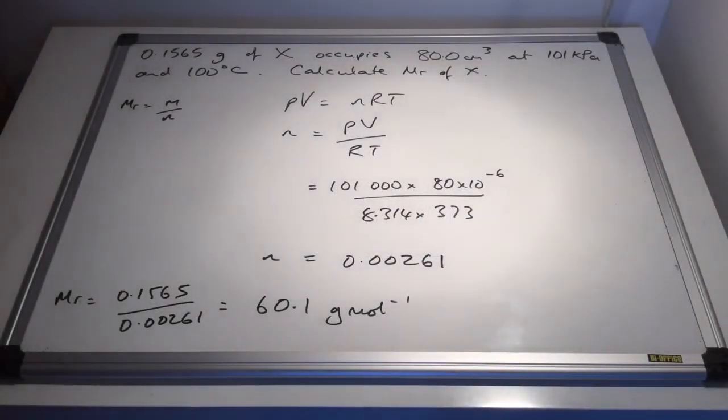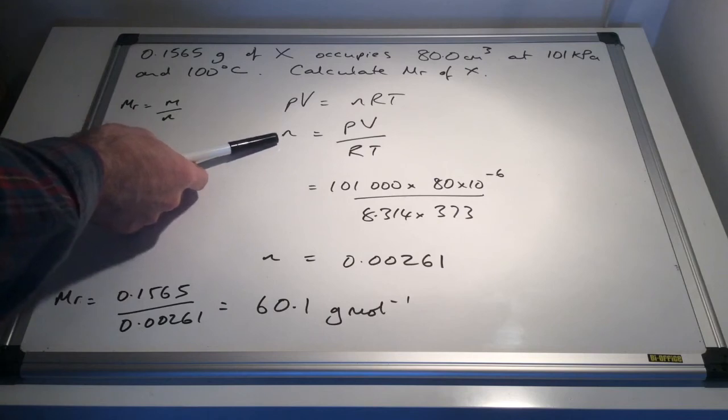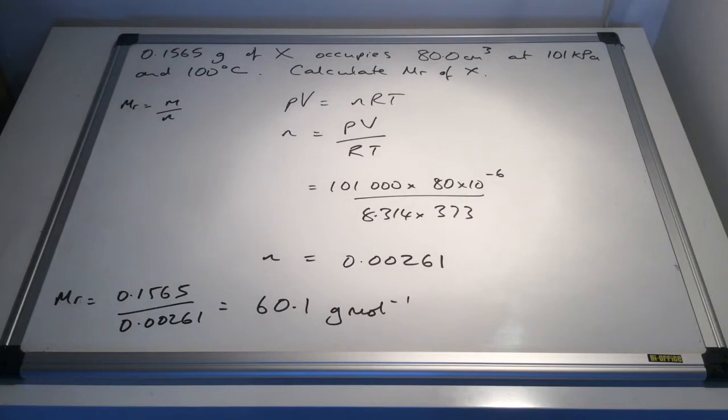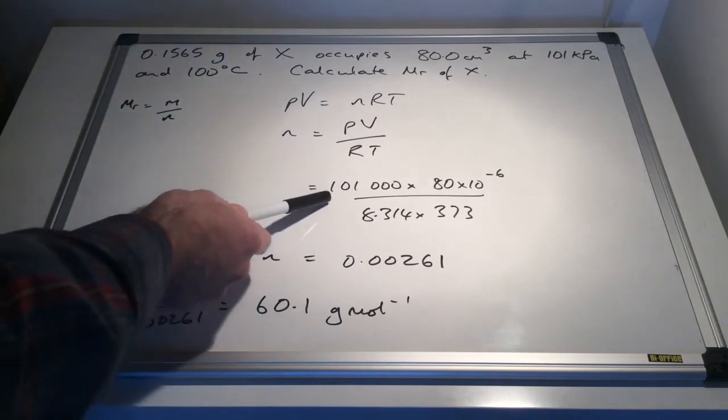So I've just put the whole solution on the board there. It's the same sort of question as before, we've got to calculate the MR of X, so we need to find the value of N, the number of moles, so we can divide the mass by the number of moles to get the MR.